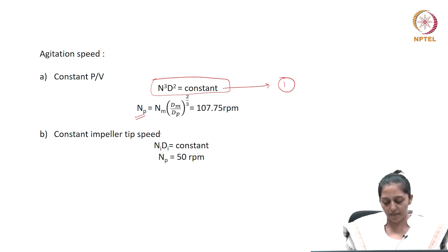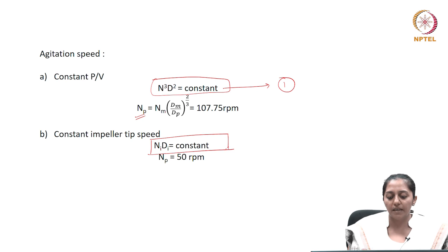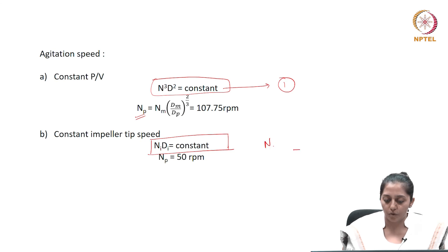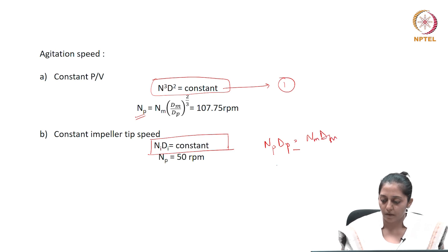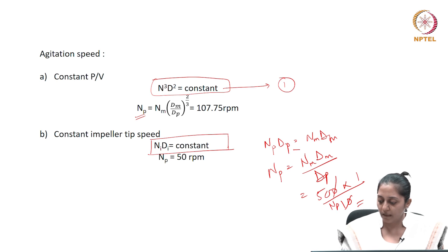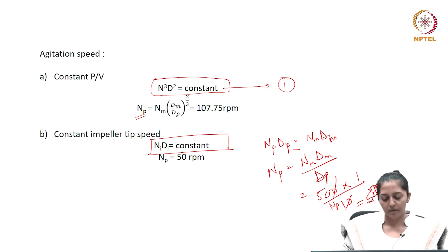If constant impeller tip speed is the scale-up criteria, the correlation changes to nd = constant. With a scale factor of 10 and the model impeller speed of 500 RPM, the impeller speed at the prototype with constant impeller tip speed as the scale-up criteria is calculated as 1/10 times 500, giving 50 RPM. We'll see you in the next video.